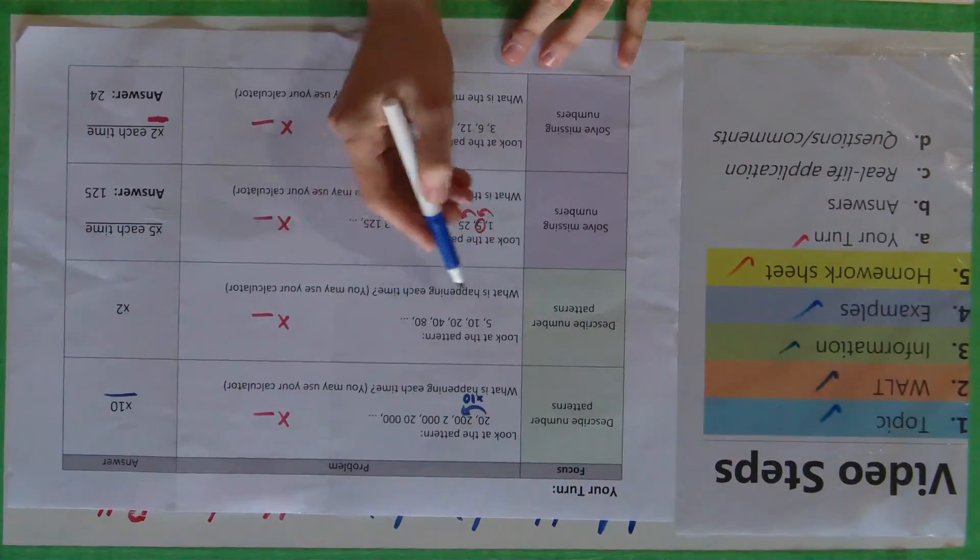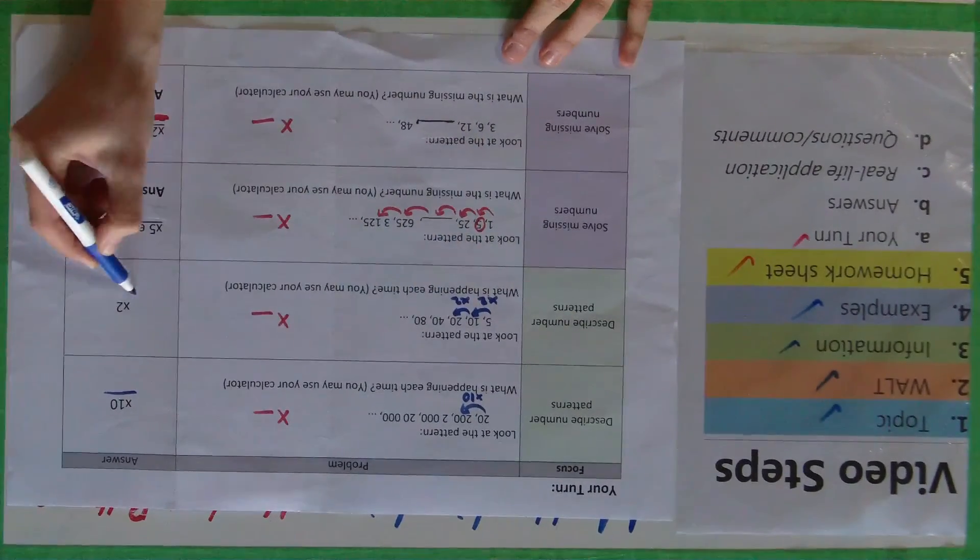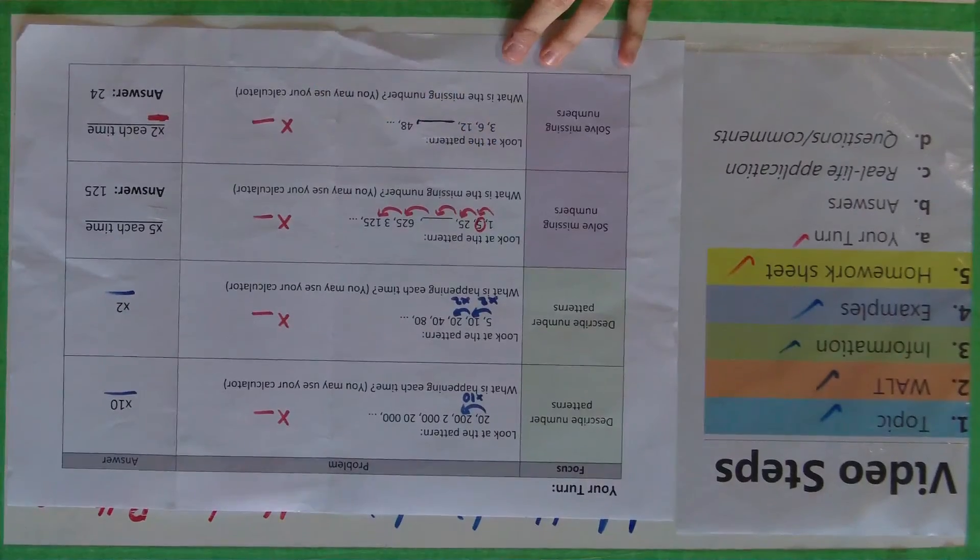This one here, I know 5 times 2 is 10, 10 times 2 is 20, so times by 2 pattern. Please mark these questions as you go along.